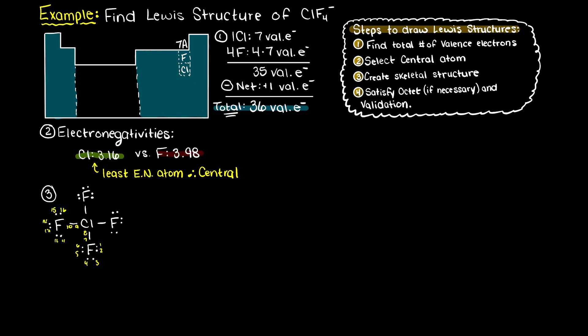Alright, to validate our Lewis structure of this compound, let's check that our total number of valence electrons matches step 1, and that all atoms that we need to are satisfied in terms of the octet rule. So, counting our valence electrons, we actually only have used 32 valence electrons.